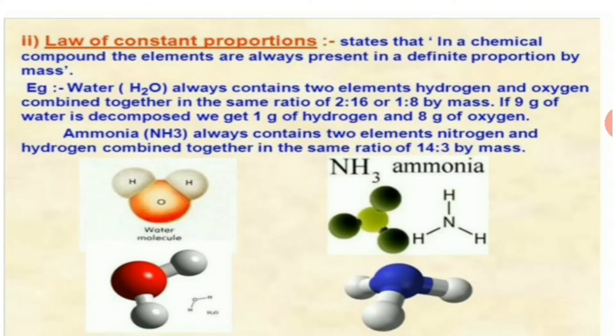The second law is the law of constant proportion, which states that in a chemical compound the elements are always present in a definite proportion by mass. For example, water consists of hydrogen and oxygen combined in a ratio of 1:8 by mass — if 9 grams of water is decomposed, we get 1 gram of hydrogen and 8 grams of oxygen. Similarly, ammonia NH3 always contains nitrogen and hydrogen in the ratio of 14:3 by mass. Whatever the source — tap, river, lake, or ocean — hydrogen and oxygen always combine in the same ratio of 1:8.